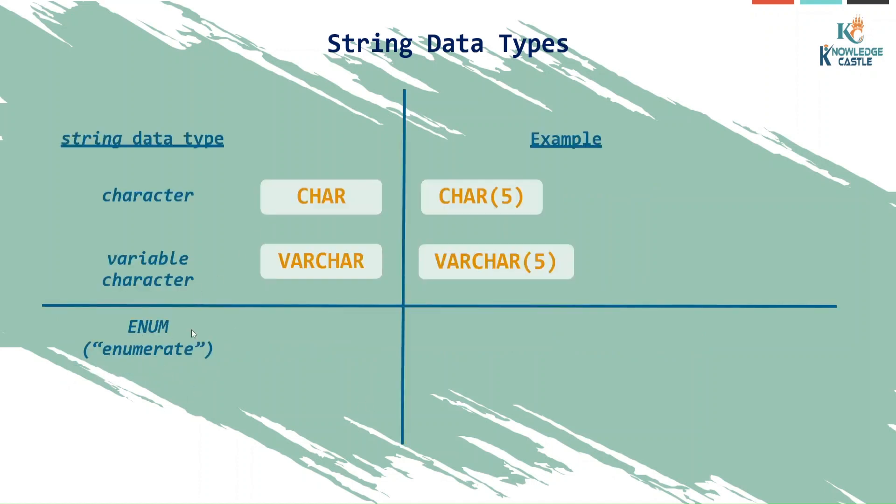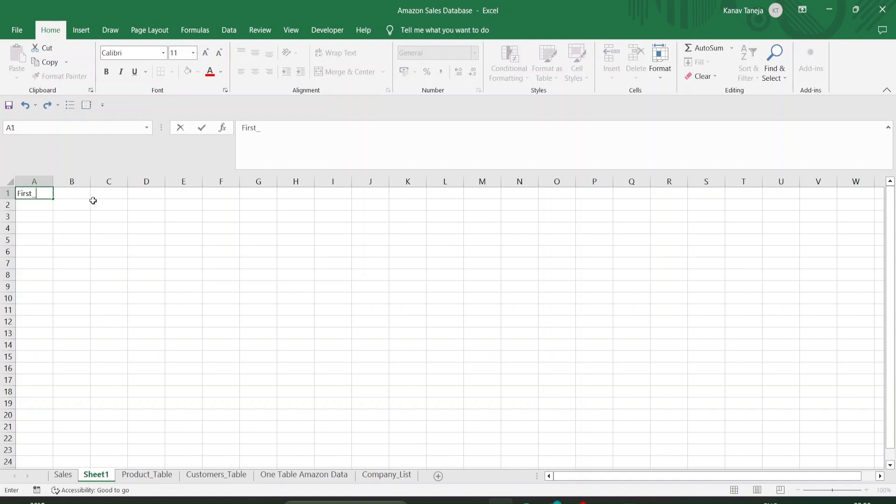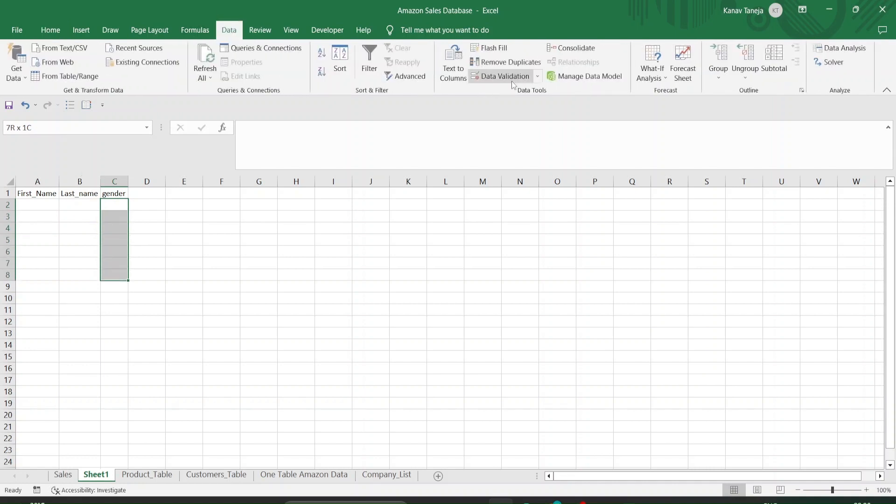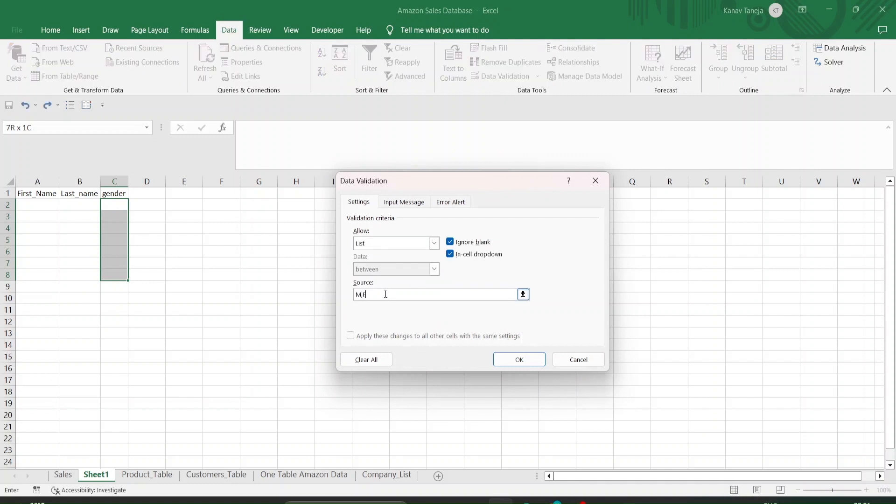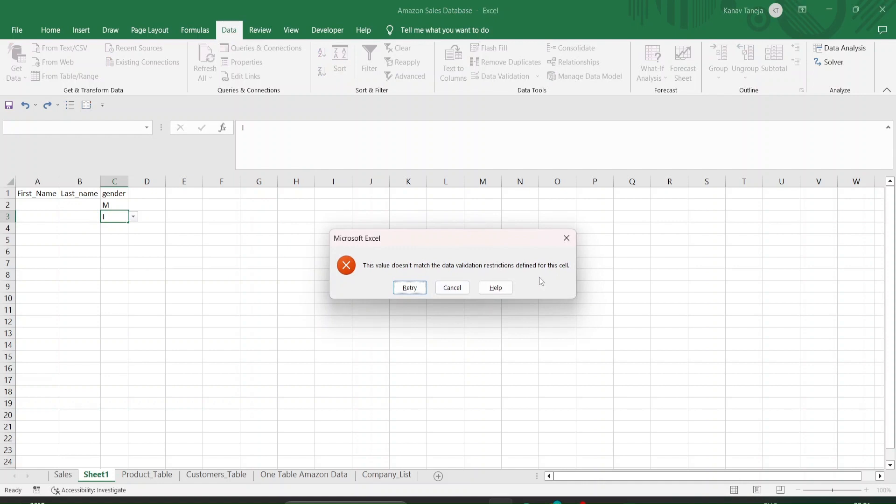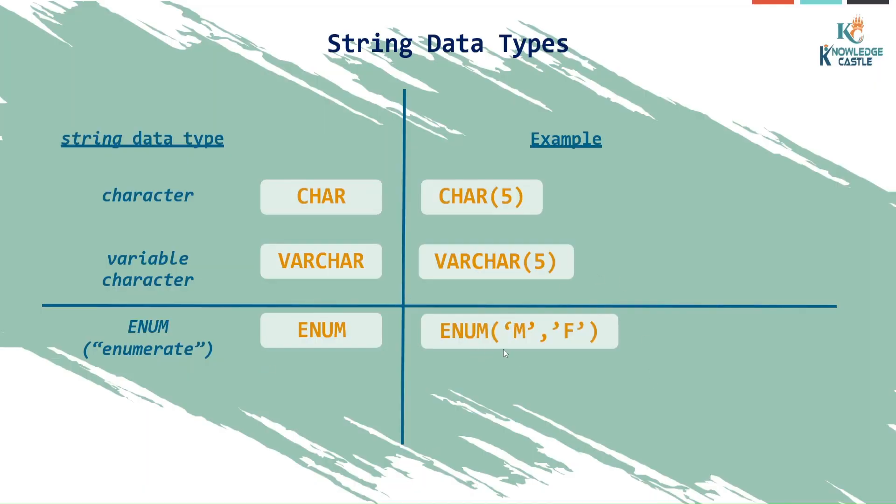Now there is one more data type which is ENUM or enumerate. What is enumerate? It's a kind of data validation. Let's suppose I want to store the data of my students: first name, last name, and then gender. In this gender column, I only want someone to add either M or F. I don't want them to write male or other or female. I want it to be M or F only. If there is any value apart from M or F, there should be an error. We can do the same thing in Excel also. We can go to the data tab, data validation, select list option, and write M comma F. If I enter M, it will allow me. But if I enter anything apart from M or F, it will give me an error. The value does not match the data validation. That is exactly what we can do with enumerate.